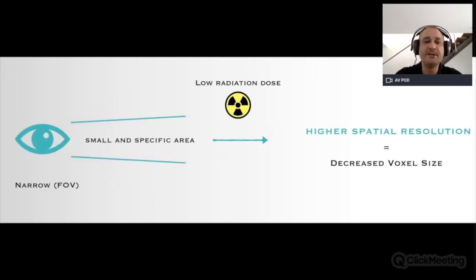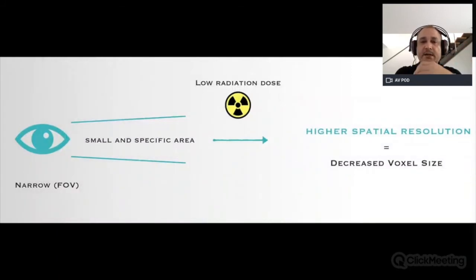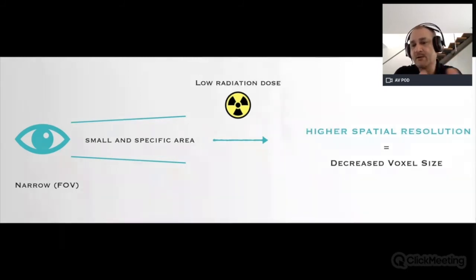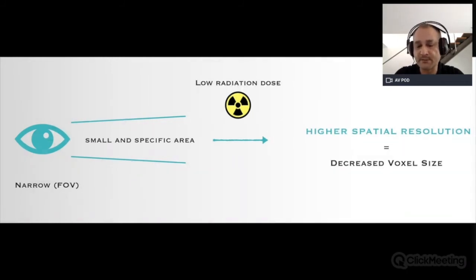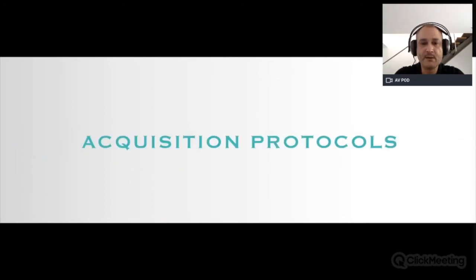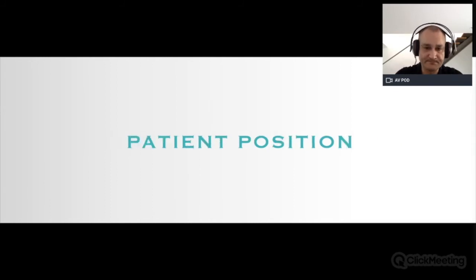In the case of a narrow field of view — looking at a very specific area — we have a lower radiation dose. Depending on the clinical situation, we can then opt for either a higher or lower spatial resolution depending on what we are looking for. What are the acquisition protocols? We have to position our patient correctly, checking two planes: the Frankfurt horizontal plane and the facial midline.